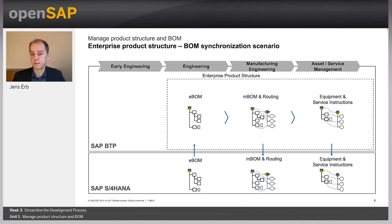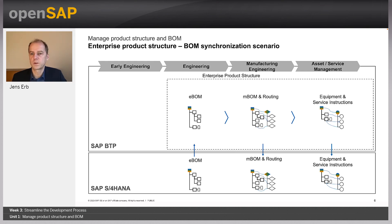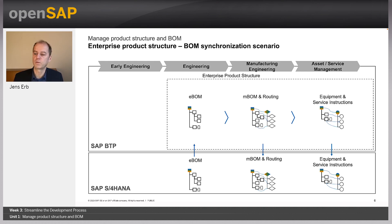The next step of the handover, which is a separate lecture here as part of this openSAP class, is a handover to an asset and service management structure. The service structure can then be created with the service-relevant objects, which is then the basis for the creation of equipment and serialized products in subsequent processes.